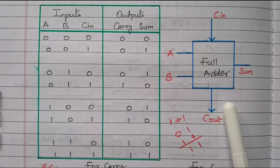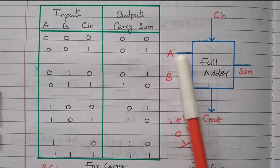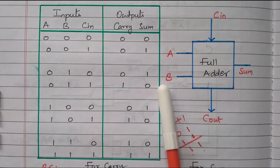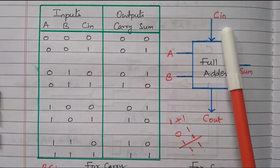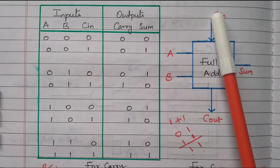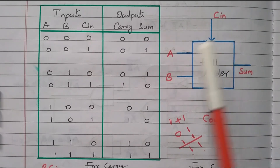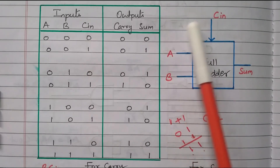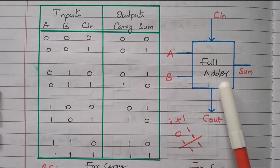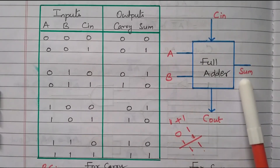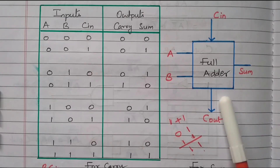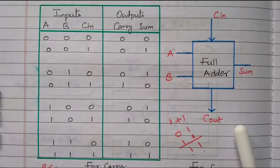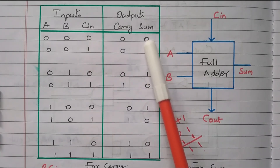Looking at the block diagram: the full adder has two primary inputs A and B, plus the carry-in, because the carry generated from a previous addition must also be considered. So carry-in, A, and B are the three inputs, giving two outputs: sum is generated and carry-out, which is added with the next digit.